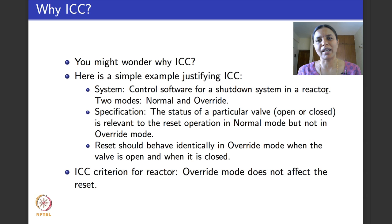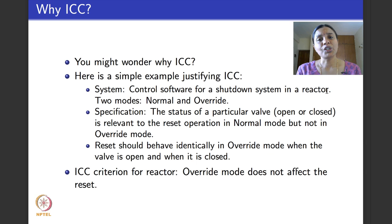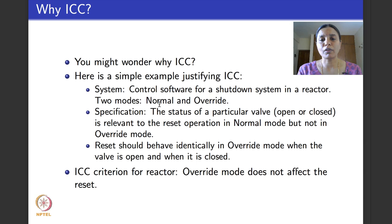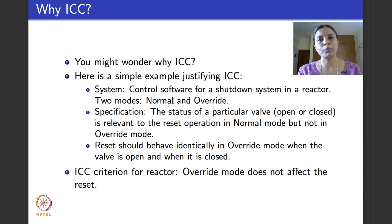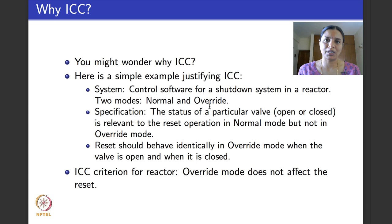Consider a shutdown system of a reactor — say a nuclear reactor. Shutdown is performed by control software. The control software operates in two modes: normal mode, representing normal operations, and override mode, where the software takes over due to an emergency and performs certain actions on the reactor system.